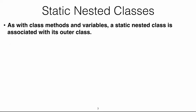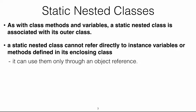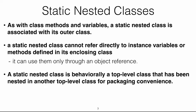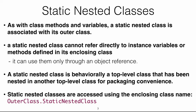A static nested class is associated with its outer class, similar to how class methods and variables work. Because it's static, it cannot refer directly to instance variables or methods defined in its enclosing class — it can use them only through an object reference. From a behavior point of view, it behaves as a top-level class that has been nested inside another class just for packaging convenience. To instantiate it, you use OuterClass.StaticNestedClass, similar to accessing any static variable.